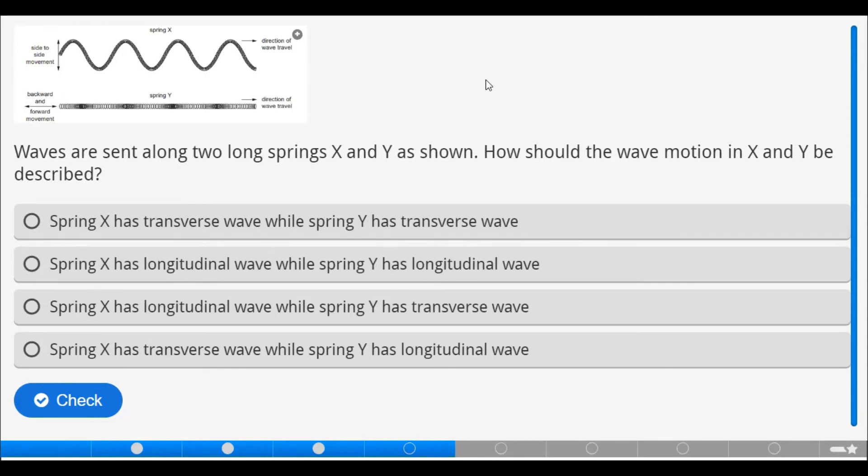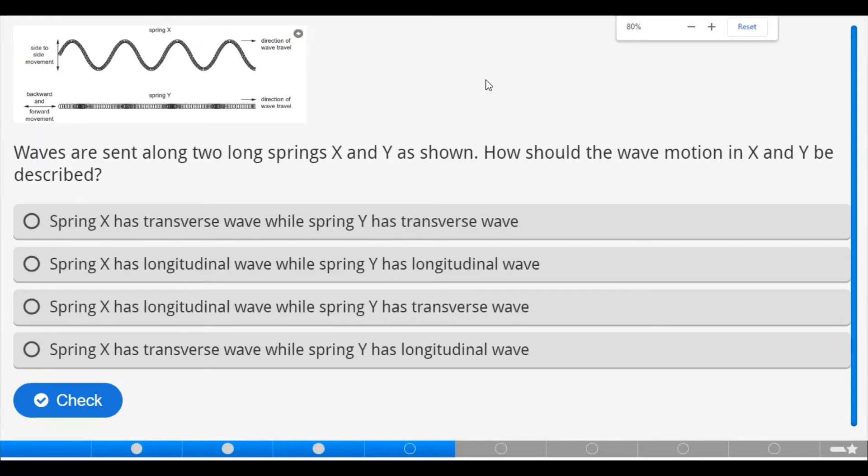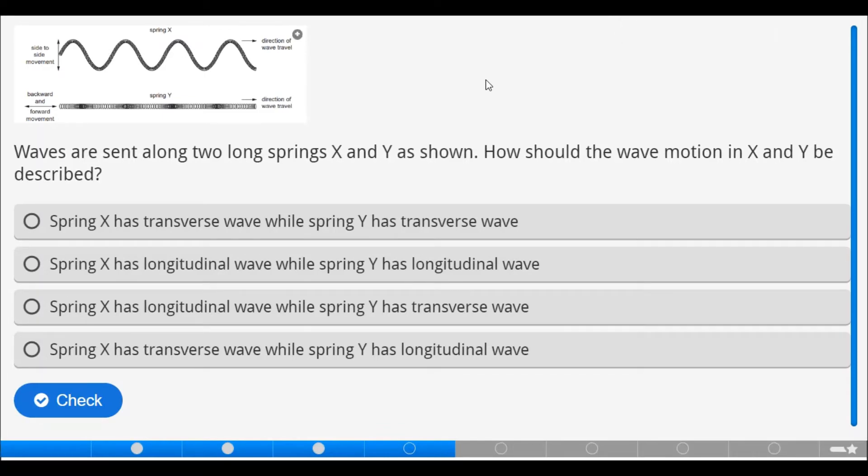Waves are sent along two long springs X and Y as shown. How should the wave motion in X and Y be described? Now, if you look at spring X, spring X is of transverse wave. That means an example of transverse wave is electromagnetic wave. And if you look at spring Y, that is longitudinal wave. And an example is sound wave. So, X is transverse, while Y is longitudinal.